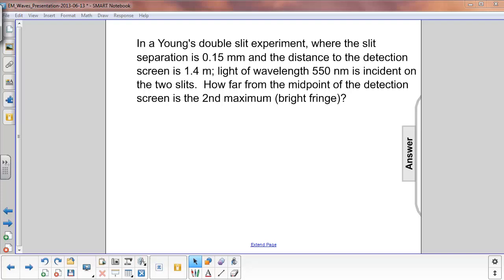In a Young's double slit experiment where the slit separation is 0.15 millimeter and the distance to the detection screen is 1.4 meter, light of wavelength 550 nanometers is incident on the two slits.